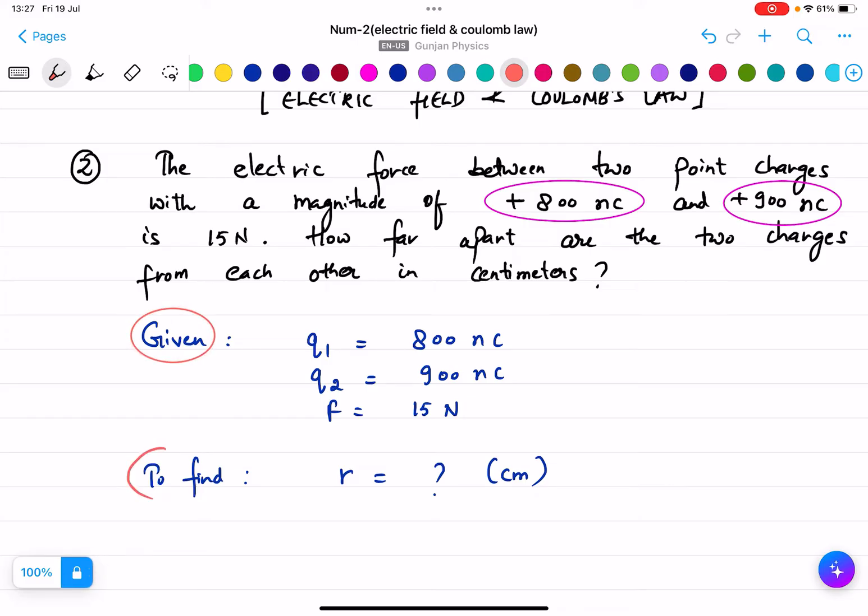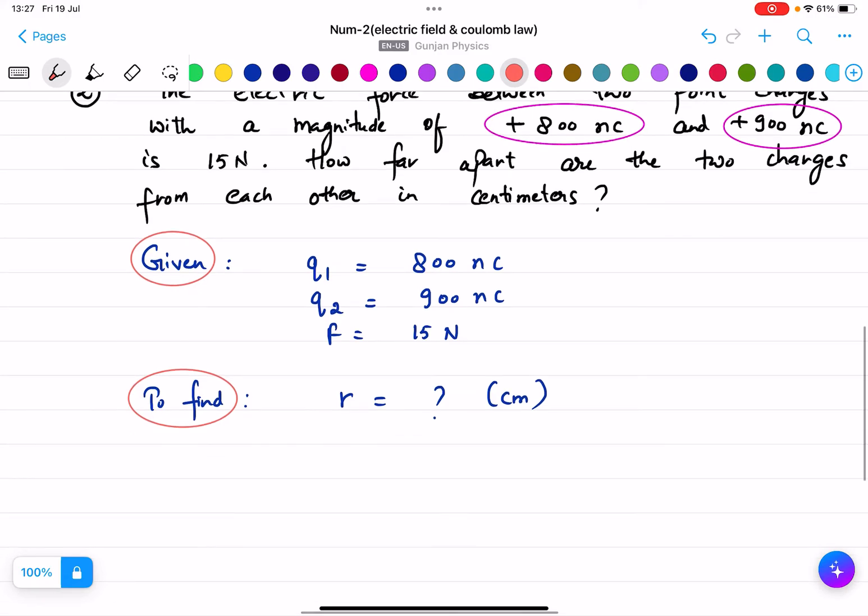We have just deduced what is given, what we need to find. So first of all we will just change 800 into 10 to the power minus 9 coulomb. Here we will just change 900 into 10 to the power minus 9 coulomb.